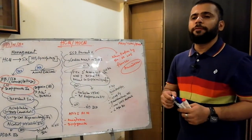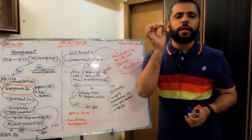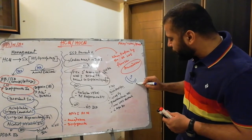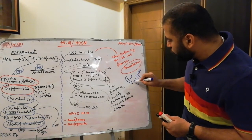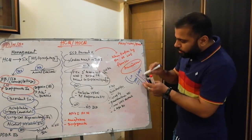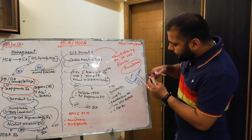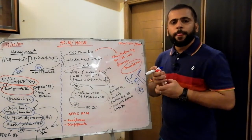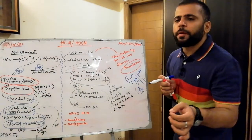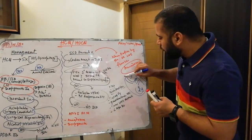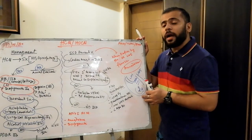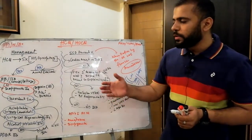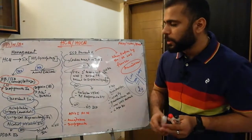In alcohol septal ablation, absolute alcohol is injected into the septal perforators of the LAD — the branches supplying the septum. This may induce anterior wall MI or lateral MI if alcohol is injected into the wrong perforators. Due to high technical demands and risk of human error, alcohol septal ablation is class 2B. Consider surgery before proceeding to alcohol ablation.